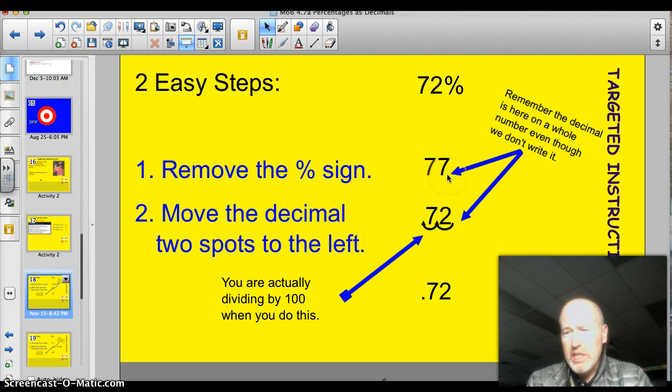Now, remember that even though 72 doesn't have a decimal point here, 72 is a whole number, so that's where the decimal would go. So, we move it two spots, and we get .72. 72%, .72. Got it?